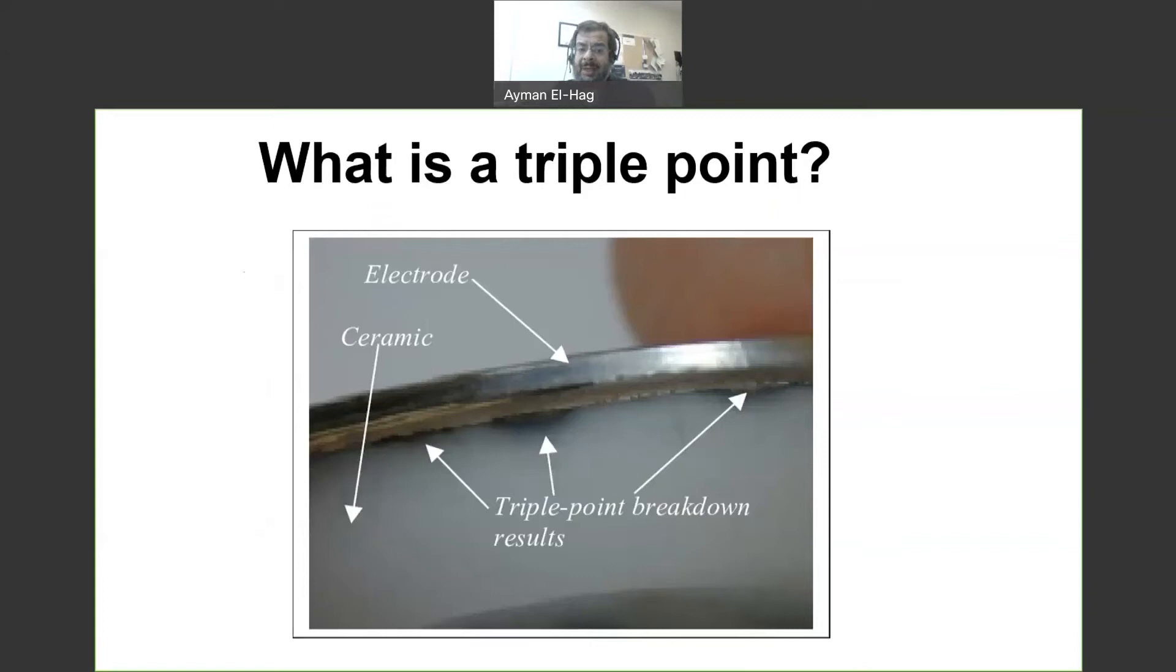So, this is an example where you will have here some breakdown. We have here an electrode. This is a ceramic material, and here is air around it. So, here you can see, this is a triple-point breakdown result. Because of the surface discharge, you can start here signs of tracking start to happen on the surface of the insulator.